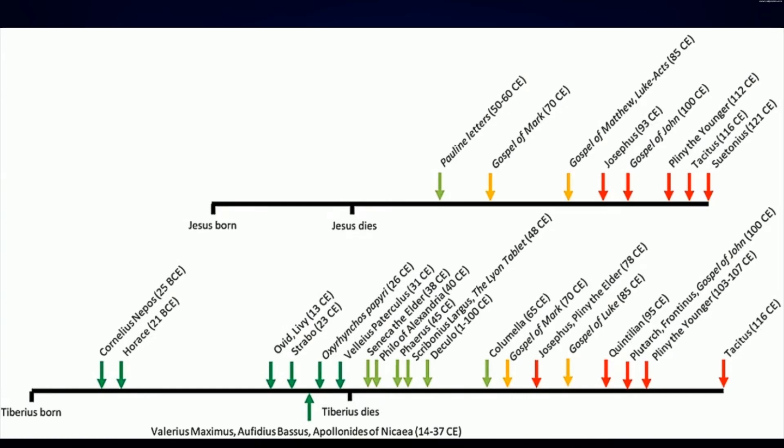Everything that's light green was written by people who were contemporary, meaning it was written after the person died but the authors were alive when the person was. And the red stuff was written by people who were born after the person died.